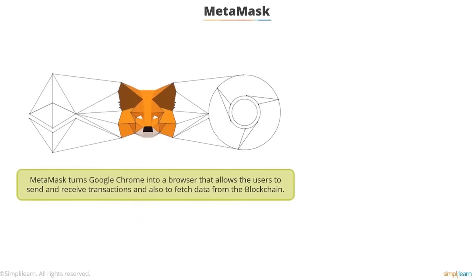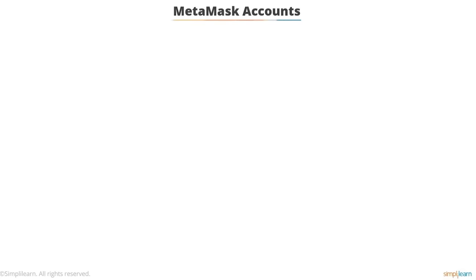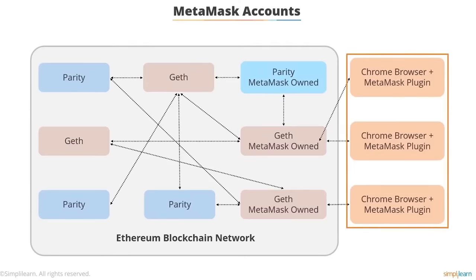MetaMask turns Google Chrome into a browser that allows users to send and receive transactions and fetch data from the blockchain. It is a browser-based wallet added as a plug-in to the Chrome browser, permitting you to run Ethereum DApps directly from your browser without running a full Ethereum node. MetaMask hosts a number of nodes so you don't have to — a user simply needs to install MetaMask and can automatically get connected to the nodes, using the Ethereum blockchain seamlessly.